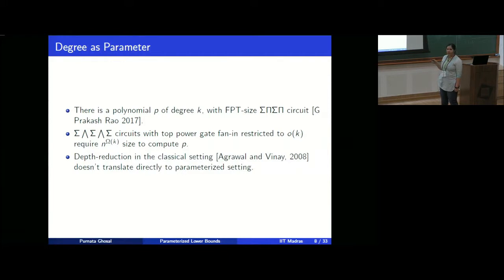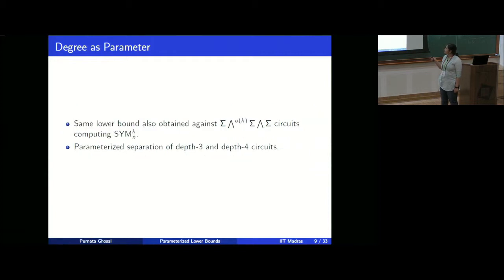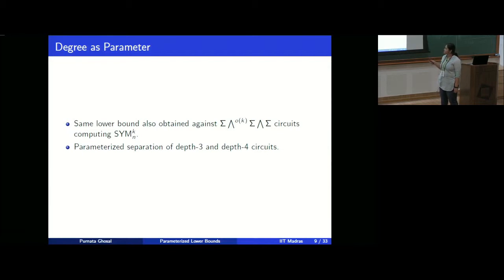This polynomial gave us the insight that the top gate fan-in can be important. We also obtained the same lower bound against elementary symmetric polynomials of degree k, and we also showed a lower bound for depth-3 circuits of that same polynomial.